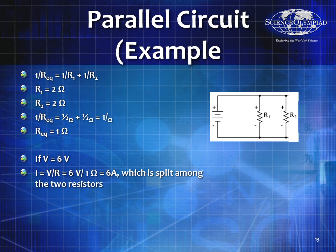Let's look at a two-resistor example. 1 over R equivalent equals 1 over R1 plus 1 over R2. If R1 and R2 are both 2 ohms, R equivalent equals 1 ohm. If the voltage equals 6 volts, the current from the battery is 6 amps, which is split among the two resistors. Each resistor sees 6 volts divided by 2 ohms, so 3 amps each — 3 amps through one, 3 amps through the other, but 6 amps through the main wires.